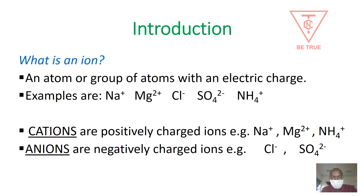When an ion is positively charged, it is called a cation. But when it is negatively charged, it is called an anion. For example, chloride ion, sulfate ion, hydroxide ion, and sulfide ion — those are anions.